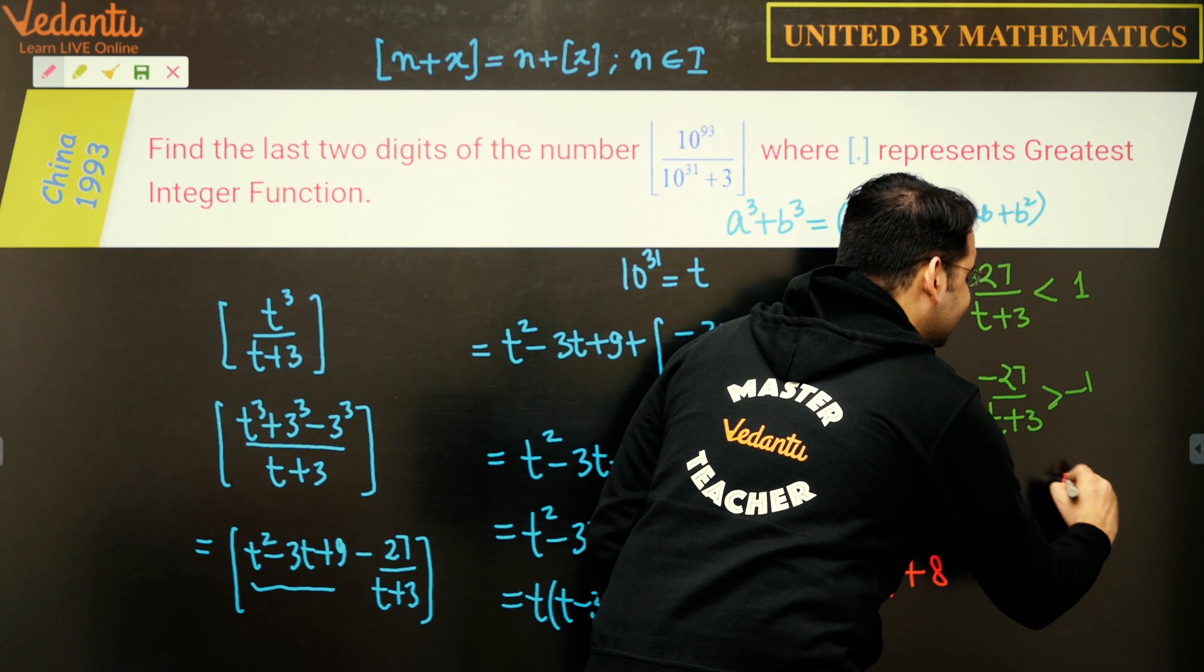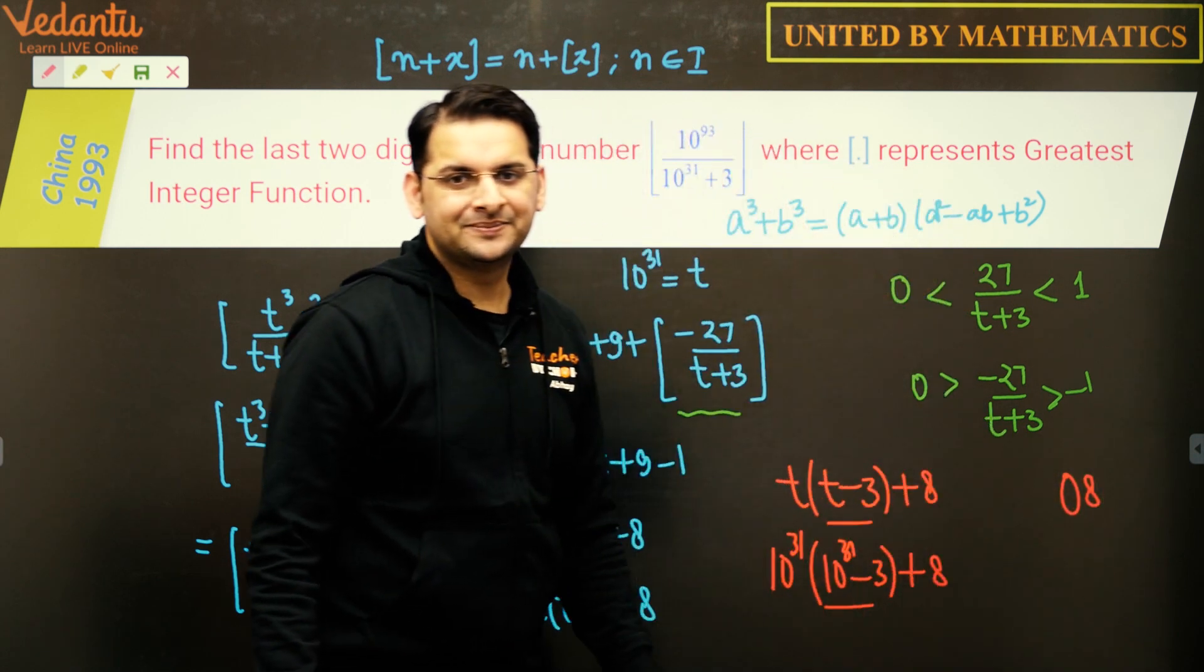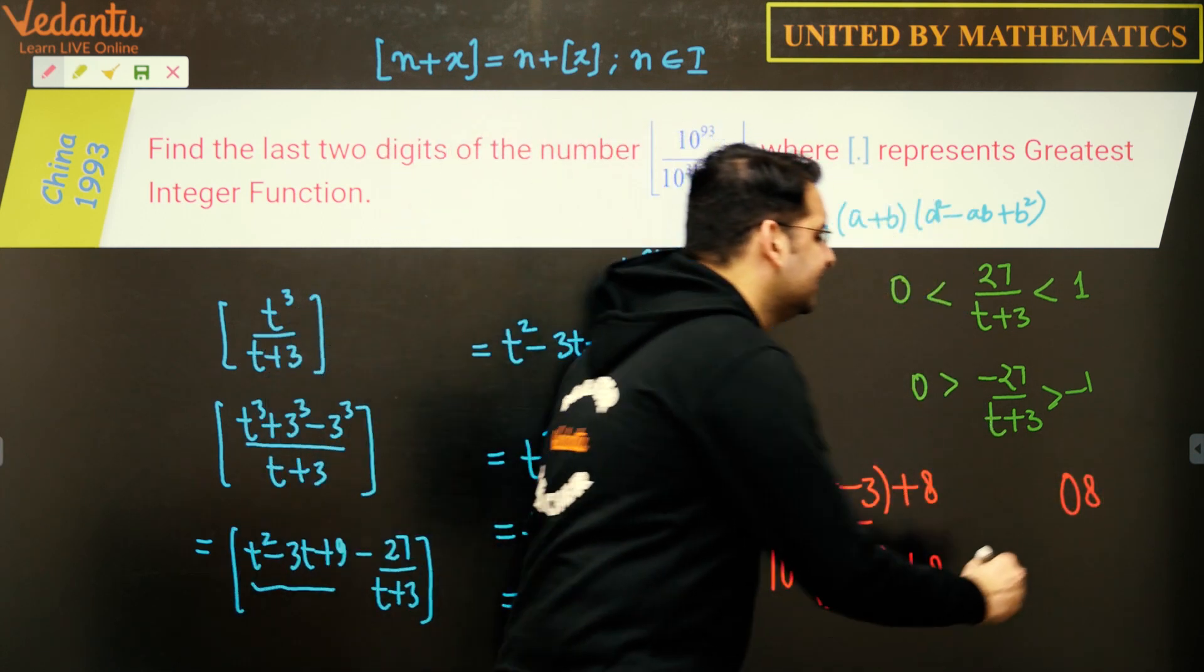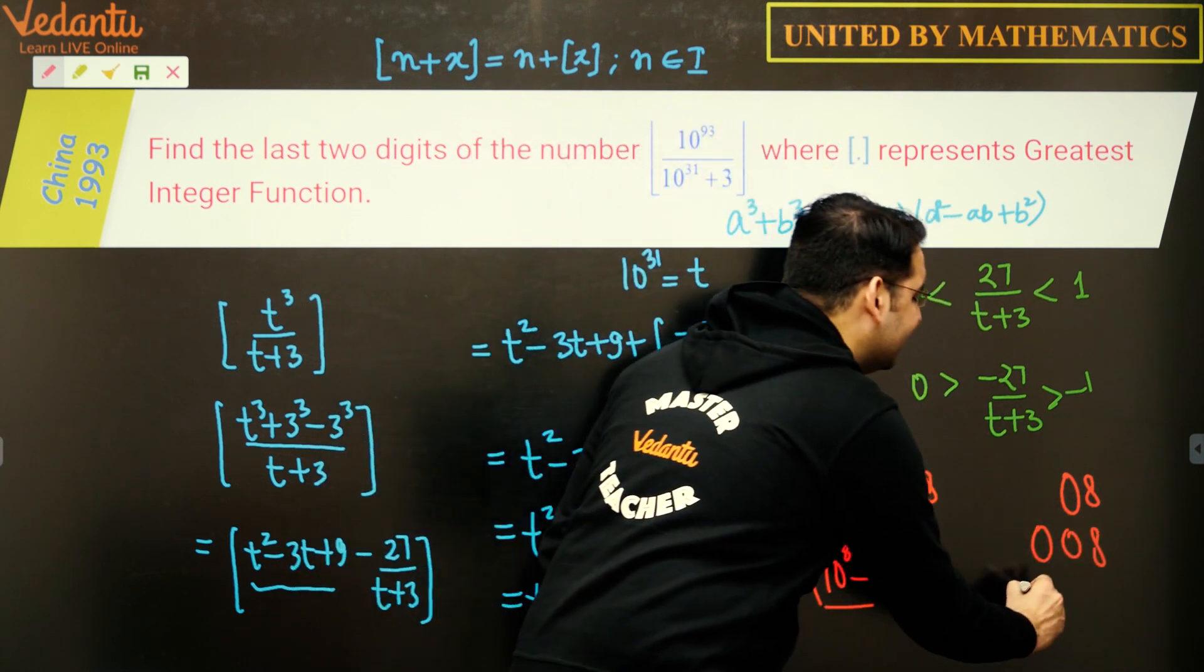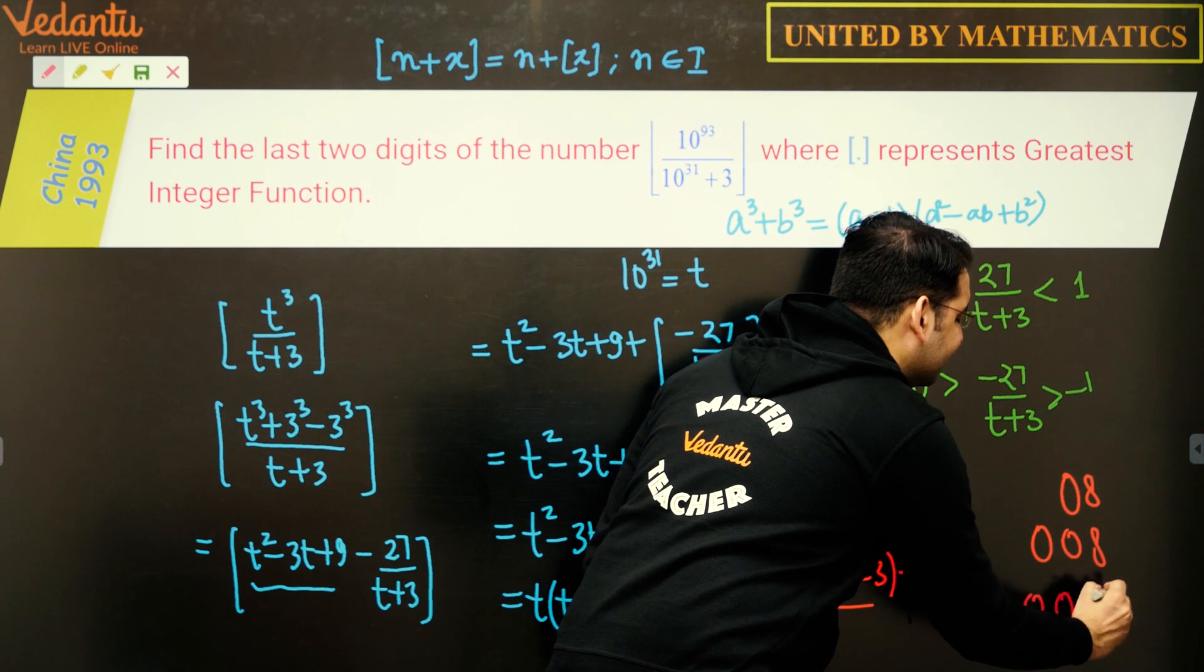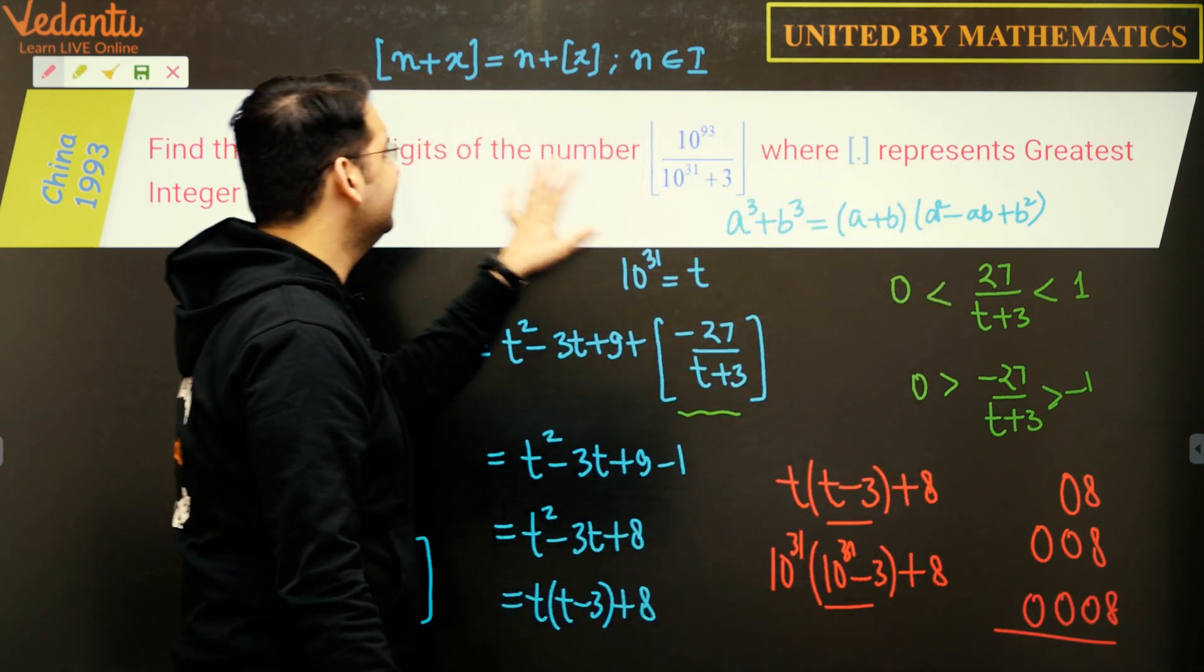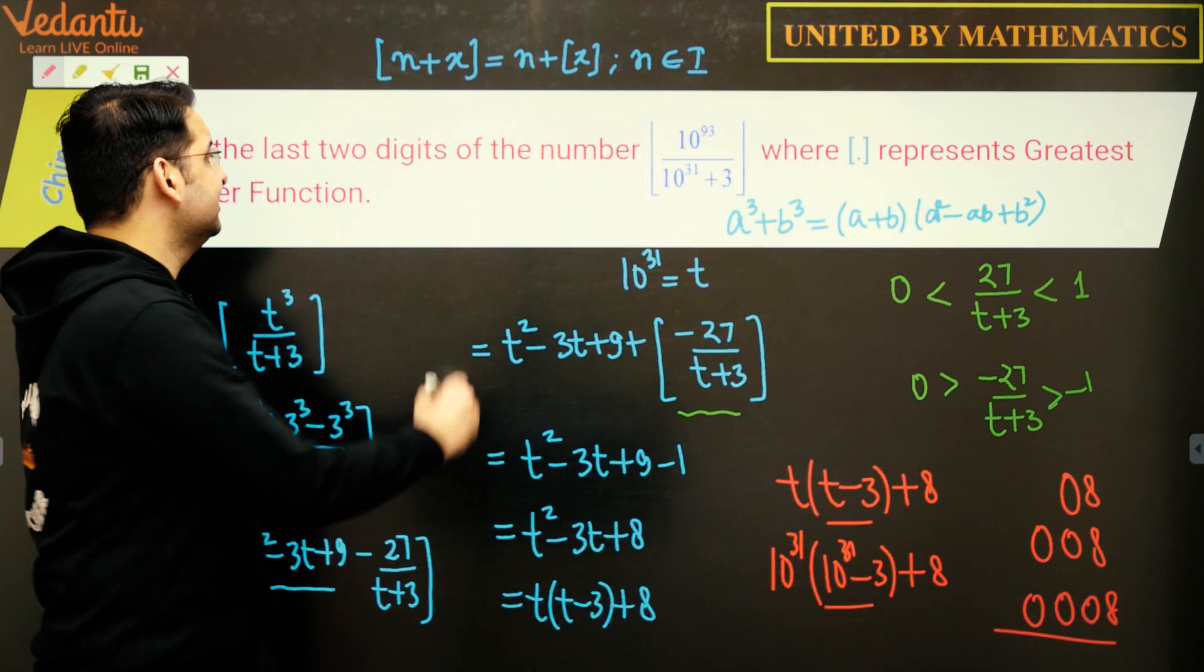Of course the last two numbers would be 0 8. The last three digits would be double zero eight, and last four digits will be triple zero eight. This answers our question. We were asked the last two digits, of course the answer would be zero eight.